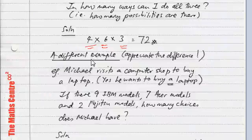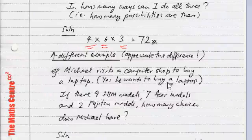Let's look at a different example. I'd like you to read the question, and appreciate the difference between what we did earlier and what we have here. Michael visits a computer shop to buy a laptop. He wants to buy a laptop, which means only one computer. And there are nine IBM models, seven Acer models, and two Fujitsu models.